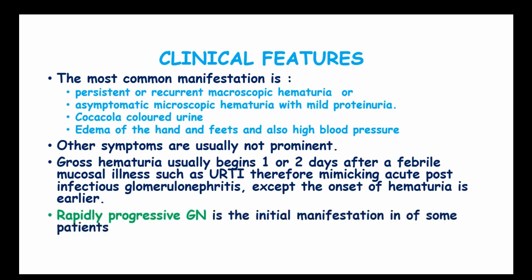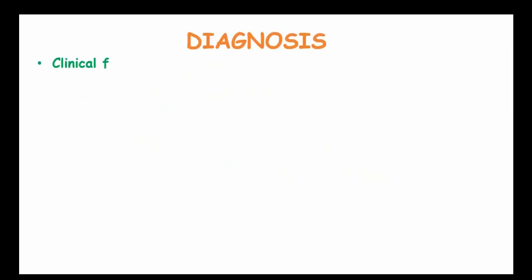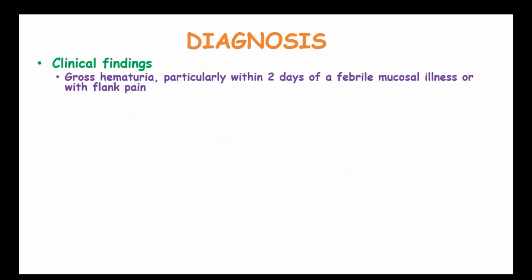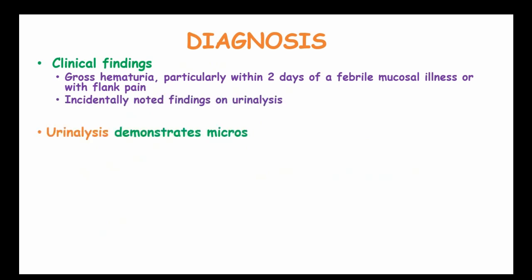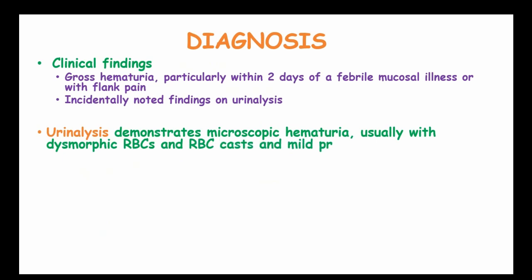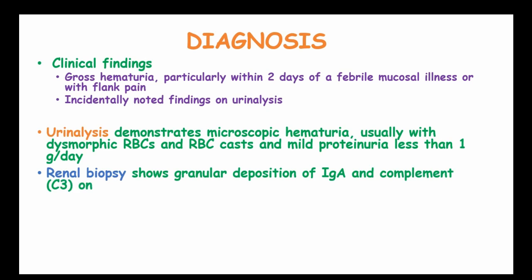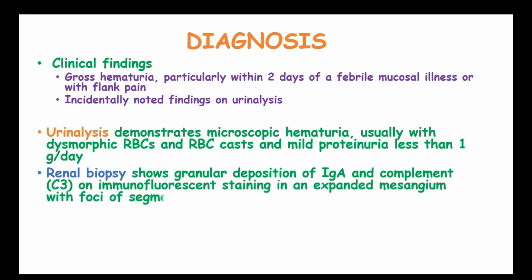There is rapidly progressing glomerulonephropathy in some patients. In diagnosis, we use clinical findings which are gross hematuria, particularly within 2 days of a febrile mucosal illness, along with flank pain. Urinalysis shows microscopic hematuria with dysmorphic red blood cells and red blood cell casts, and mild proteinuria less than 1 gram per day can be present. Renal biopsy shows granular deposition of IgA and complement C3 on immunofluorescent staining in an expanded mesangium with foci of segmental proliferative or necrotizing lesions.